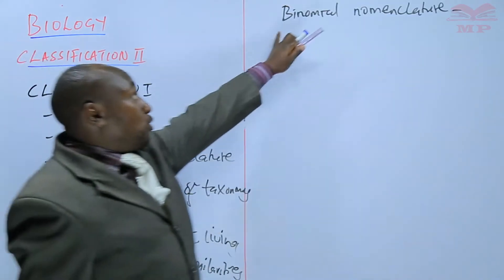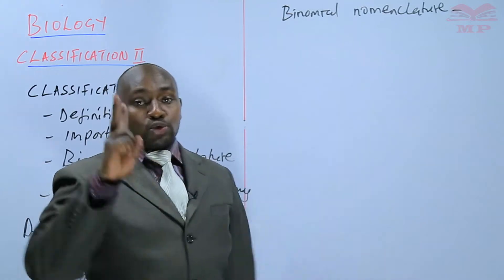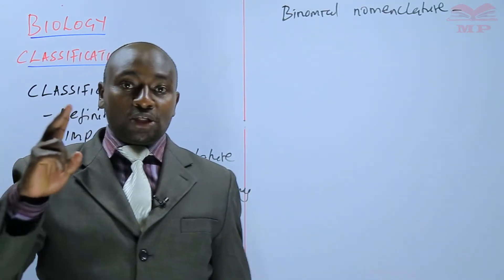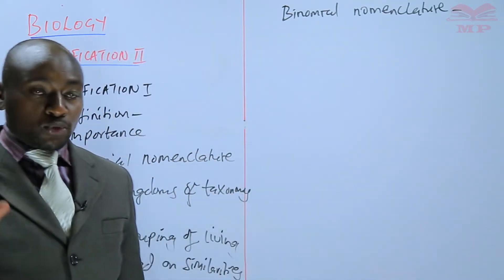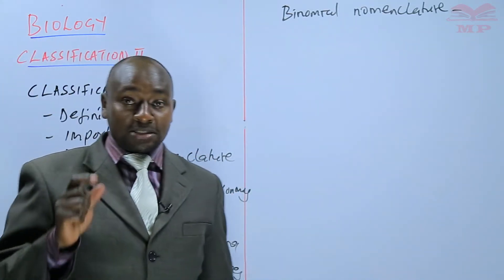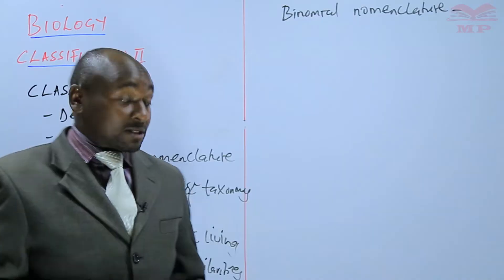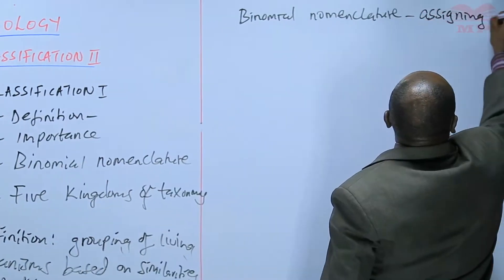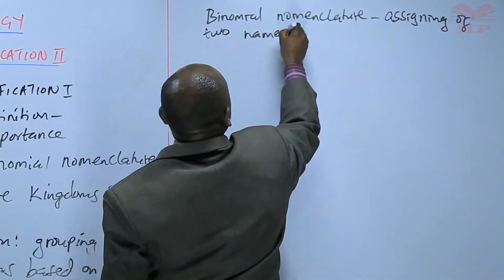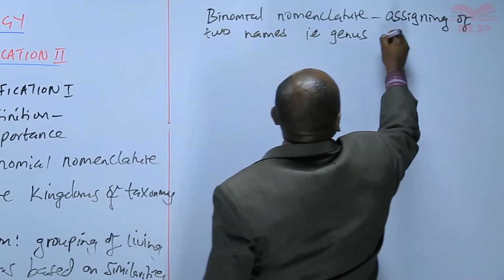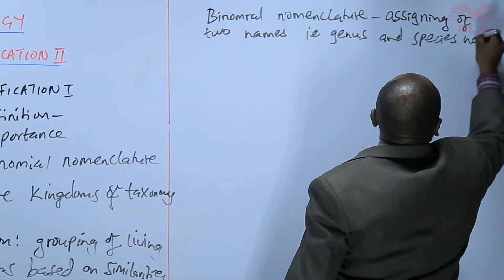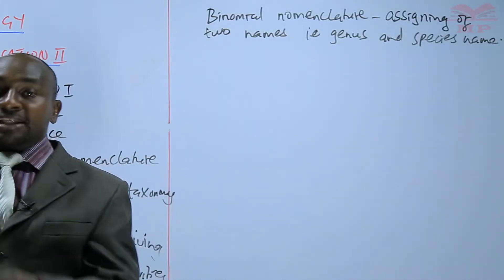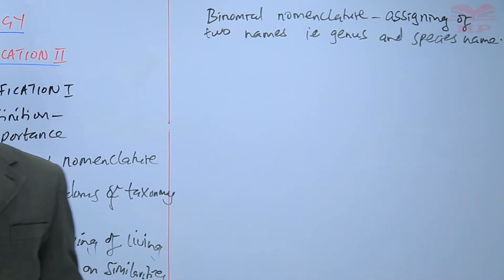Binomial — bi means two — so there must be two names, and those two names must be scientific names: the genus and the species name.